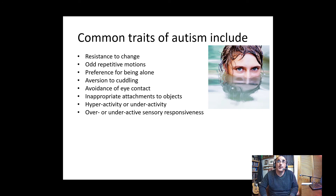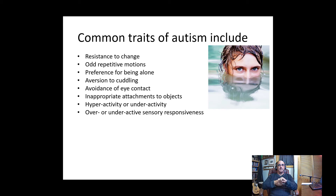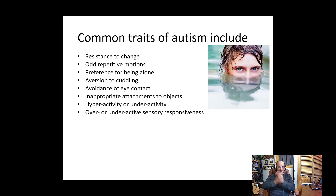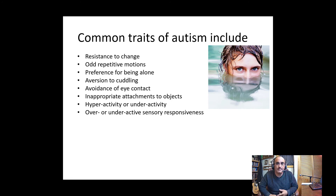People with autism have an over or underactive sensory responsiveness relating to light, sound, smell, taste, and touch. For example, in a loud situation someone might not react, but in what seems a quiet space they might cover their ears in discomfort. Crowds, loud noises, and clapping can also cause distress. Similarly, smells, textures of fabrics — sweaters, zippers — and food tastes and textures can trigger over or underactive sensory responses.